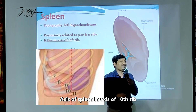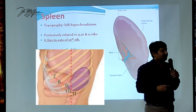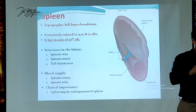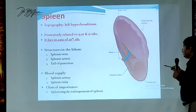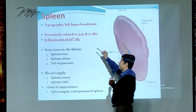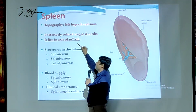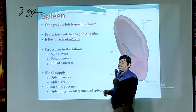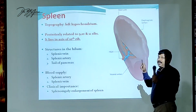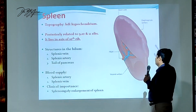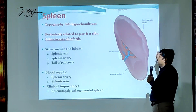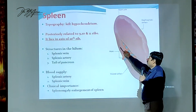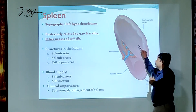So exactly centered around that. That is the position of the spleen. The most important fact to remember is that the axis of the spleen is in the axis of the 10th rib, and its costal surface is related to the 9th, 10th and 11th ribs.